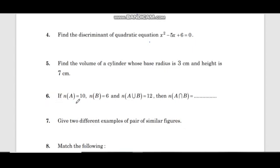Sixth problem: If n of A equals 10, n of B equals 6, and n of A union B equals 12, then find n of A intersection B. Using the formula: n of A intersection B equals n of A plus n of B minus n of A union B, which is 10 plus 6 minus 12 equals 4.